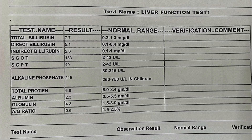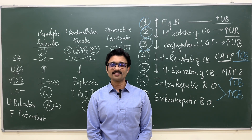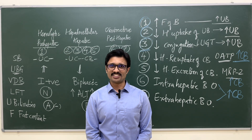This last report is for self-assessment — please comment on the type of jaundice in the comment section. The report shows total bilirubin elevated, direct elevated, indirect also elevated. Liver enzyme SGOT (aspartate transaminase) is elevated whereas alkaline phosphatase is normal. Please comment on the type of jaundice. Thanks for watching this video. I hope you understood. I will meet you in the next lecture. Thank you.